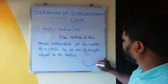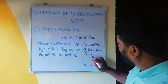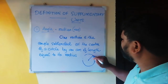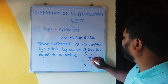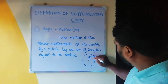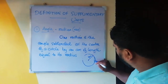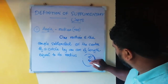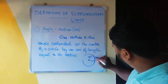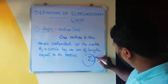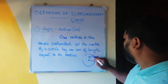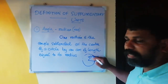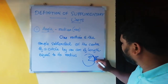There is a circle. There is a radius. We consider a particular arc length. That arc length is 5 cm. This radius is 5 cm, and this arc length is 5 cm.